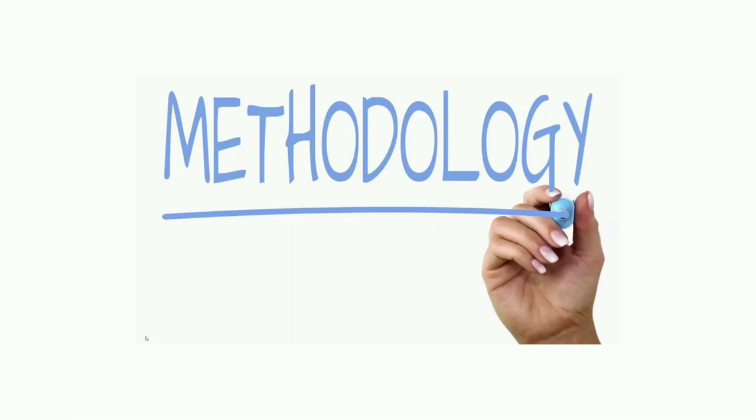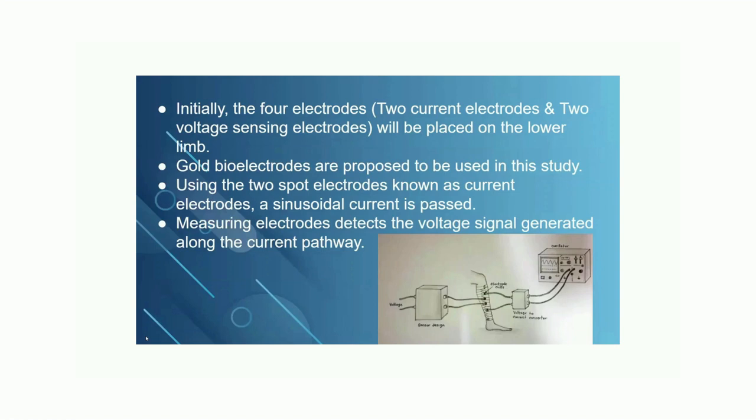The method of measuring process is as follows. Initially, the four electrodes will be placed on the lower limb. Two voltage electrodes will be surrounded by the two current electrodes. And we are expected to use gel bioelectrodes to ensure good conductivity and their low reactivity when in contact with human body. Then a sinusoidal current will be passed through the current electrodes and voltage difference will be measured. Then the blood volume flow will be measured using Nyboer's formula.